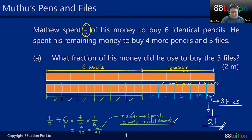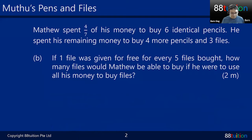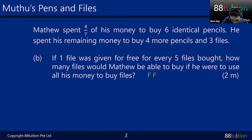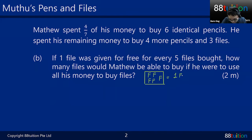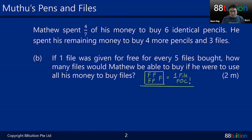Let's move on to Part B — this is a two-mark question. If one file is given free for every five files bought, it means: if you buy five files, the shopkeeper gives you one more file free of charge. I love things that are FOC — free of charge!